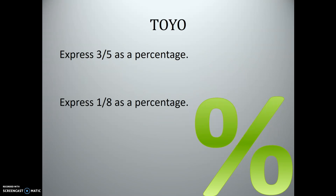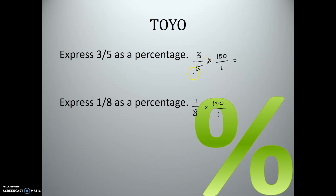Express 3 over 5 as a percentage and 1 over 8 as a percentage. I suggest using method two on both. For 3 over 5 times 100 over 1, cross-cancel by dividing the denominator and numerator both by 5 — we get 1 on the bottom and 20 on top. So 3 times 20 is 60 over 1, which equals 60%.